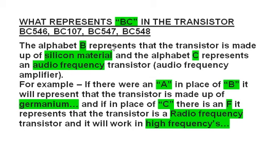Most people use BC546, BC107, BC547, and BC548 in their electronic circuits, but they don't know what 'BC' means in this name. We have different types of transistors — BC546, BC107, BC547 — but we don't know about that 'BC'. So now we will discuss what 'BC' means.